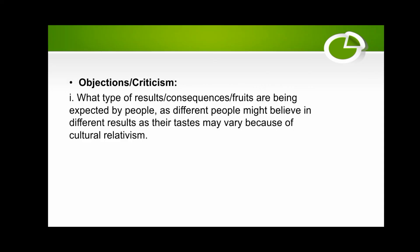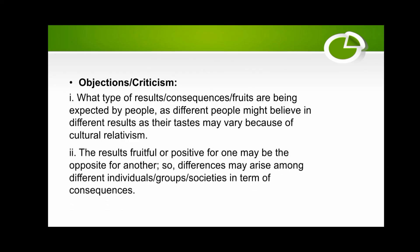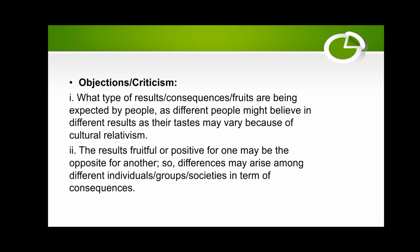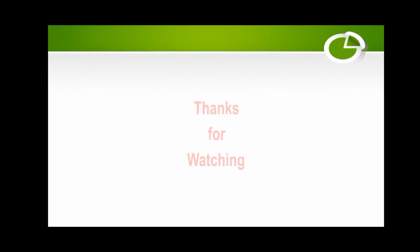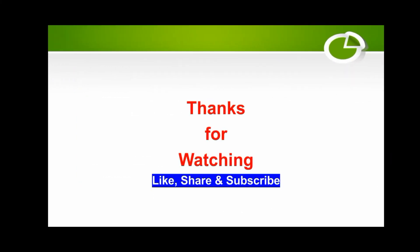Objection and criticism: what type of results or consequences are being expected? Different people might believe in different results as their tastes may vary because of cultural relativism. Second criticism: results or fruits that are positive for one person may be the opposite for another, so differences may arise among different individuals and groups in terms of consequences. Thanks for watching — like, share, and subscribe.